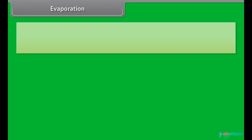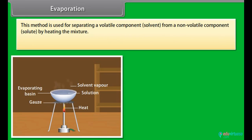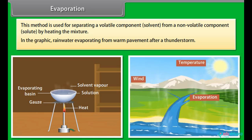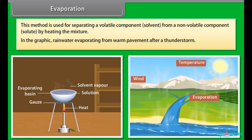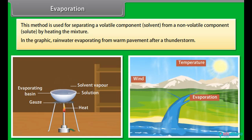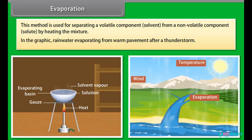Evaporation: This method is used for separating a volatile component (solvent) from a non-volatile component (solute) by heating the mixture. An example is rainwater evaporating from warm pavement after a thunderstorm.